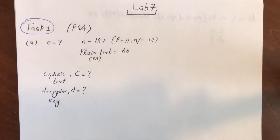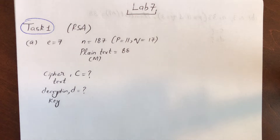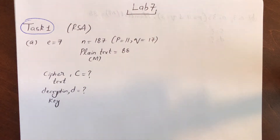Let's start with lab 7. Lab 7 is the mathematical modeling of RSA algorithm, Diffie-Hellman, and we also work on LFSR and stuff like that. So let's start with task 1.